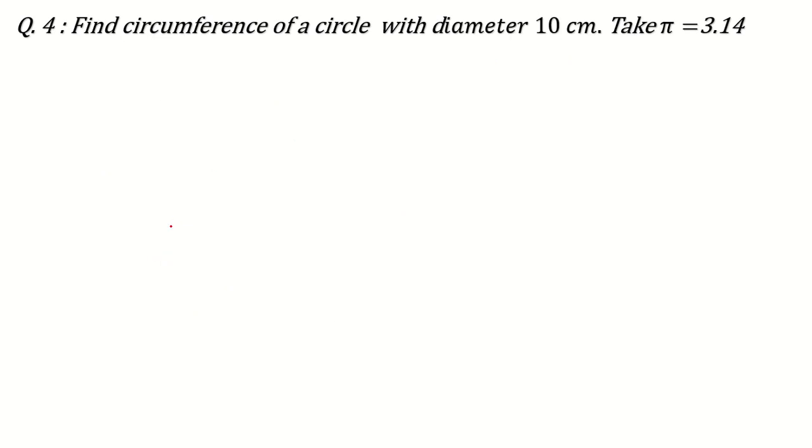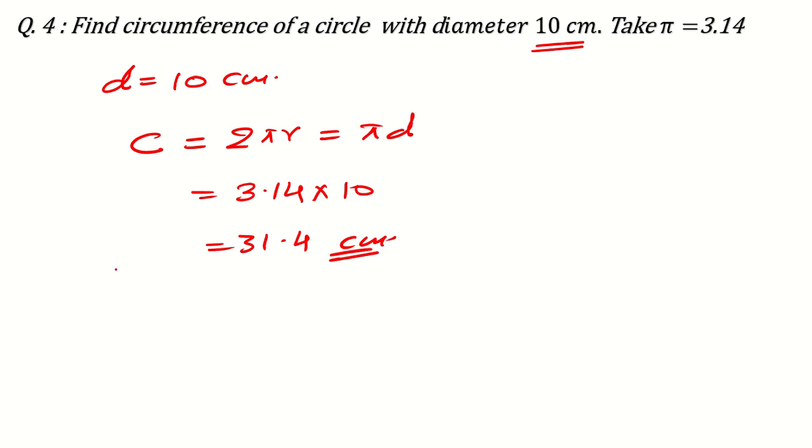Another question can be, find the circumference of the circle with diameter 10 centimeters. Here D is equal to 10 centimeters. What will be the circumference? It is 2πr or you can say π times D. So it is equal to 3.14 times D is 10. So that is 31.4 centimeter.